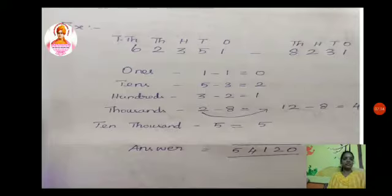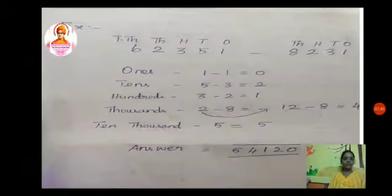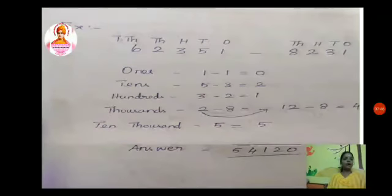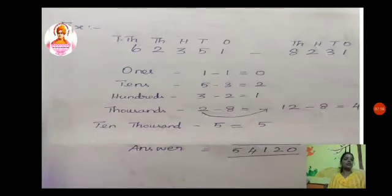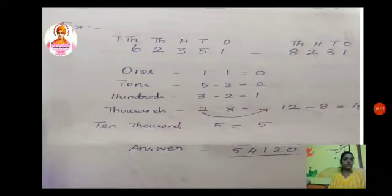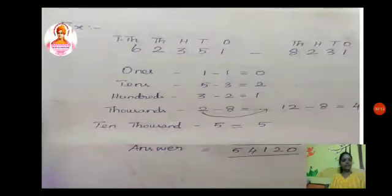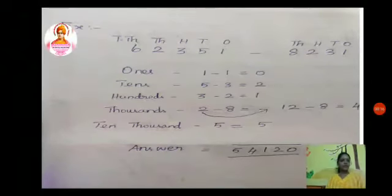We move on to the ten-thousands place. In ten-thousands, only the first number has a value — the second number does not have a value in that place. We already gave 1 to the thousands place, so 6 becomes 5. So 5 is written as the answer for ten-thousands. Now I have all the place value results, and I arrange them according to place value: ones place 0, tens place 2, hundreds place 1, thousands place 4, ten-thousands place 5. So the answer is 54,120.